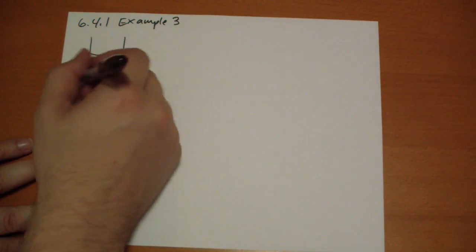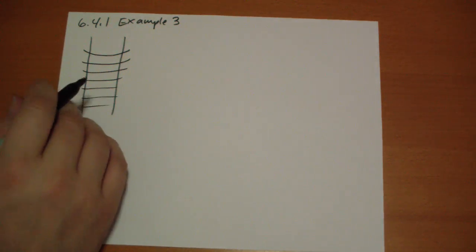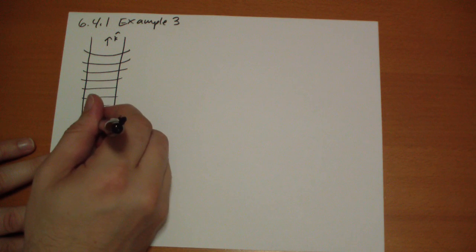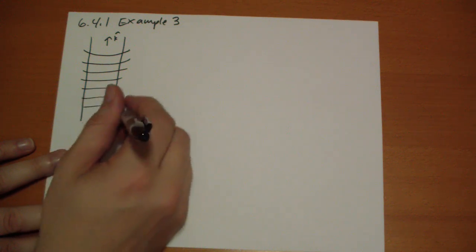So with the loops there, k hat is going to point along the axis up here and phi is going to point around.